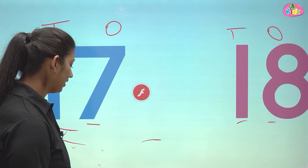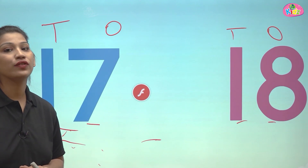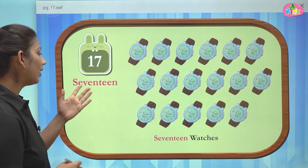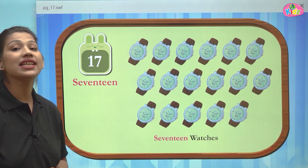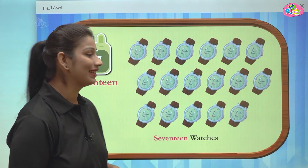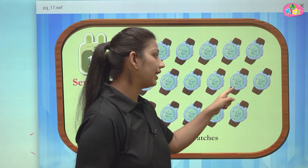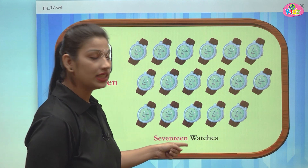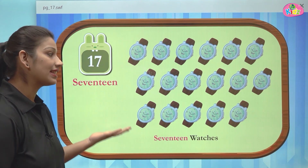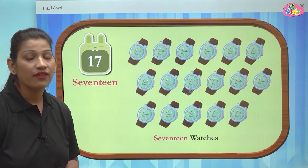17 and 18. Let us understand the concept of numbers 17 and 18 with the help of a video. Here students we can see number 17. And here we can see watches — let us count the number of watches: 1, 2, 3, 4, 5, 6, 7, 8, 9, 10, 11, 12, 13, 14, 15, 16 and 17. There are total 17 watches. 17 is a two digit number which comes after 16.